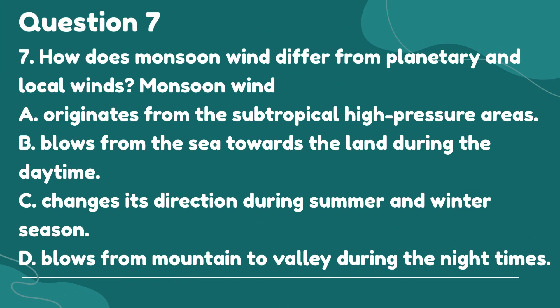Question 7. How does monsoon wind differ from planetary and local winds? A. Originates from the subtropical high pressure areas. B. Blows from the sea towards the land during the daytime. C. Changes its direction during summer and winter season. D. Blows from mountain to valley during the night times.